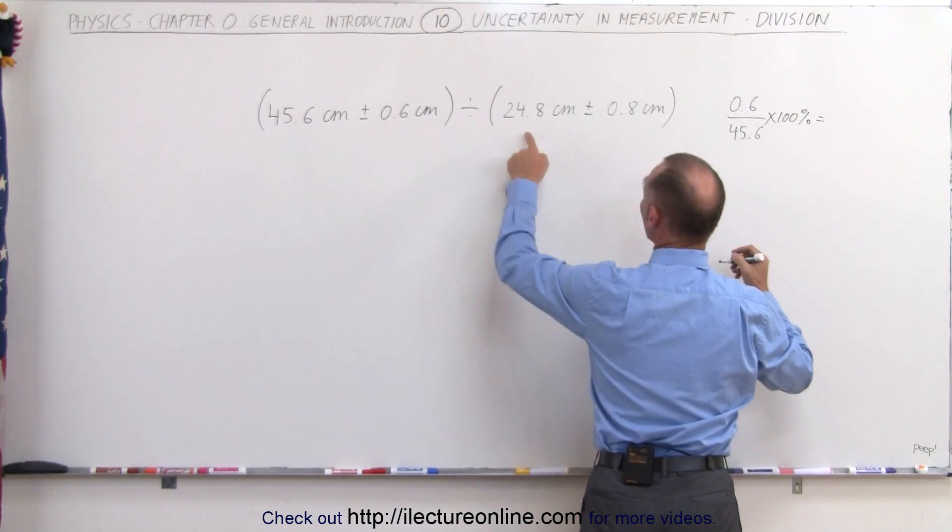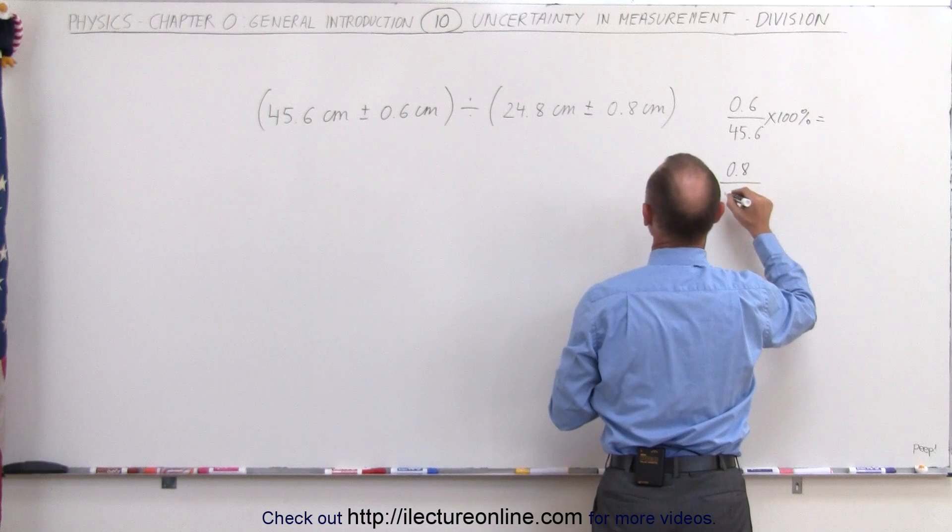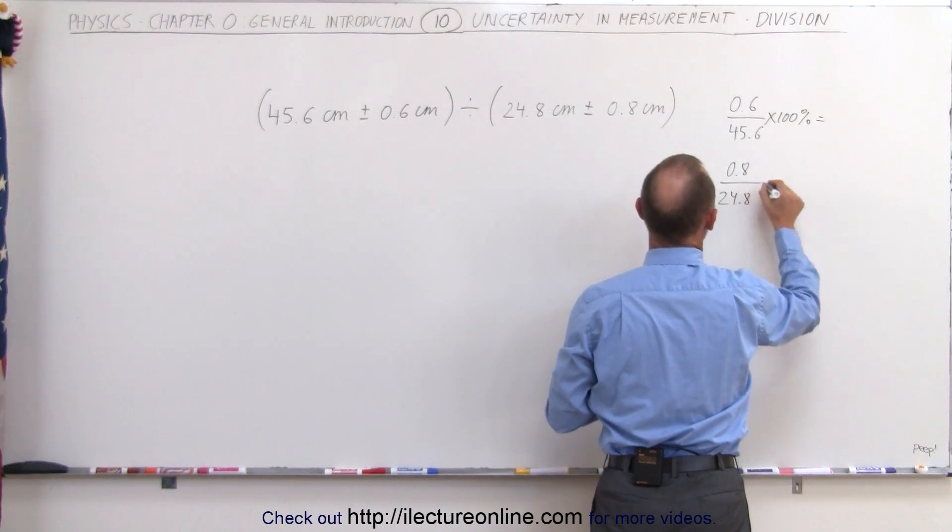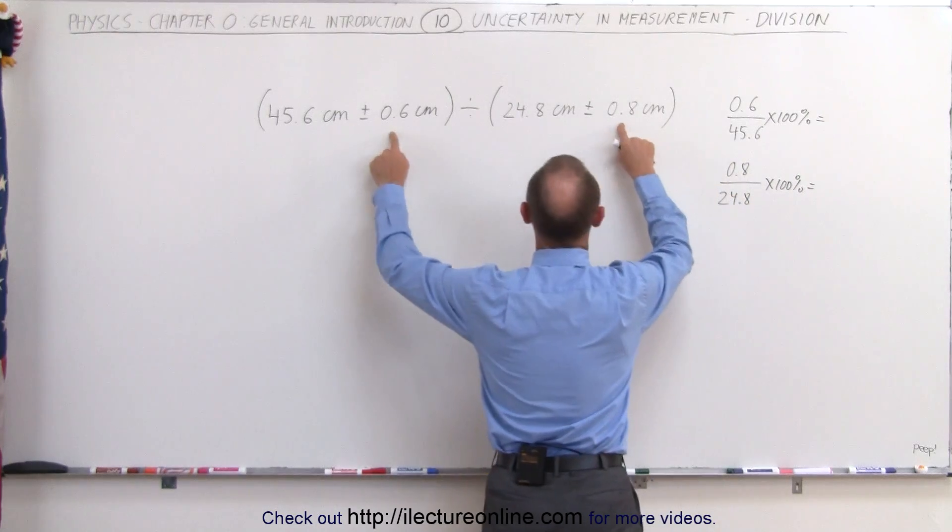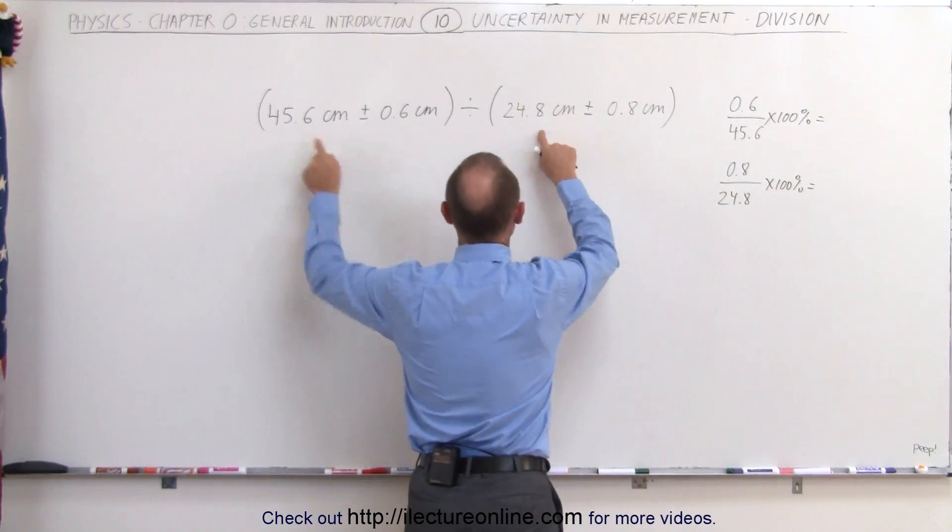And we're going to do the same for here. So 0.8 divided by 24.8 times 100%. So that means we convert both of these numbers into percentages relative to the actual measurement.